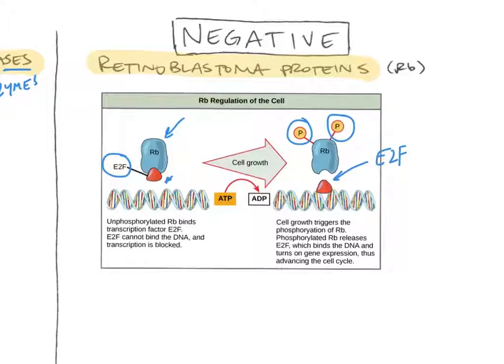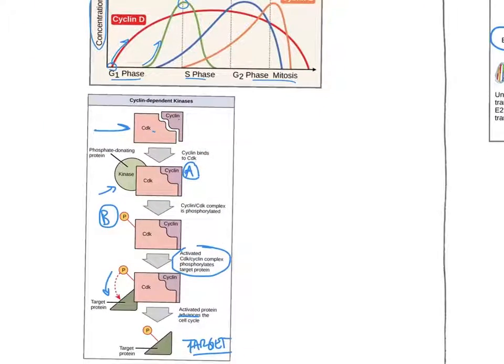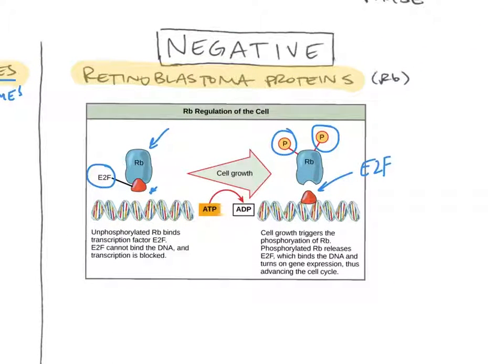So this transcription factor might even code for something like a kinase over here. So these are all proteins. They're coded for in the DNA. And so this negative factor, this retinoblastoma might have some kind of blocking mechanism. Or if that transcription factor isn't there, it's not going to actually even encode, or it's not going to build that kinase until the conditions are favorable.